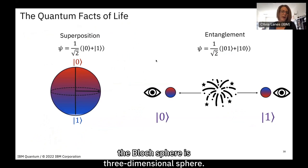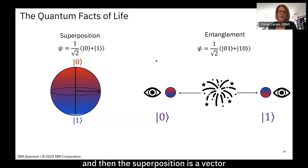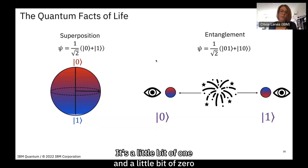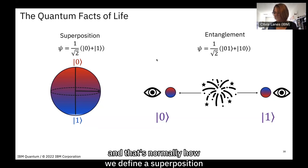As a quick overview, the Bloch sphere is a three-dimensional sphere where the two states on the north and south poles refer to the zero state and the one state. A superposition is a vector pointing anywhere on the surface of the sphere, representing a combination of the two states — a little bit of one and a little bit of zero — with a normalization factor out front.